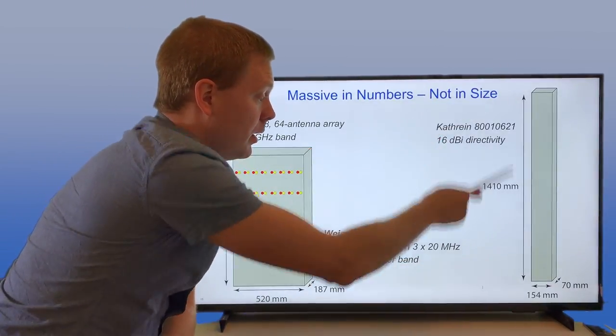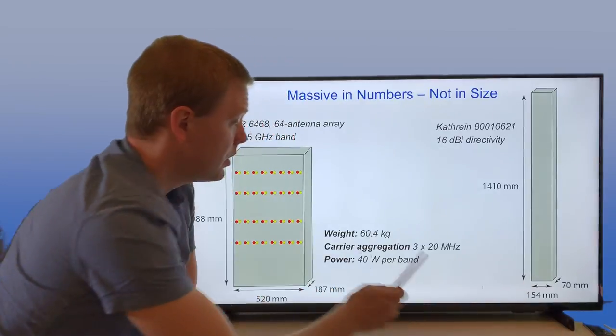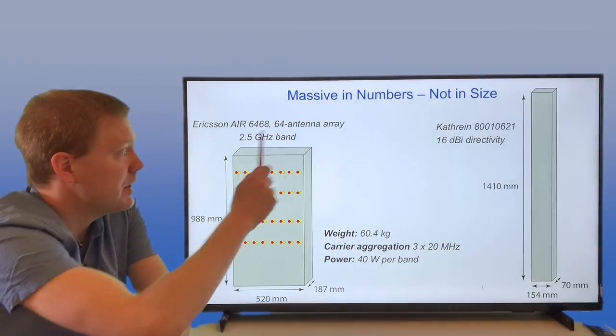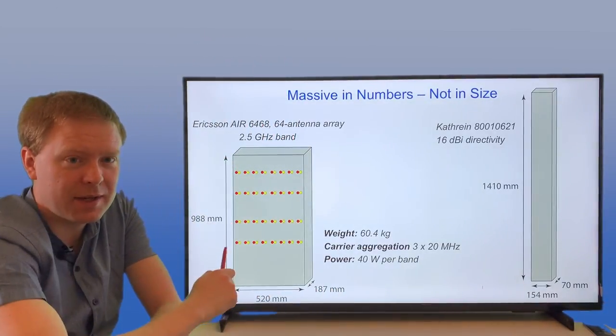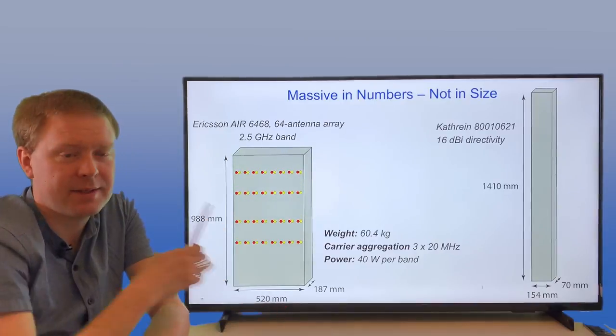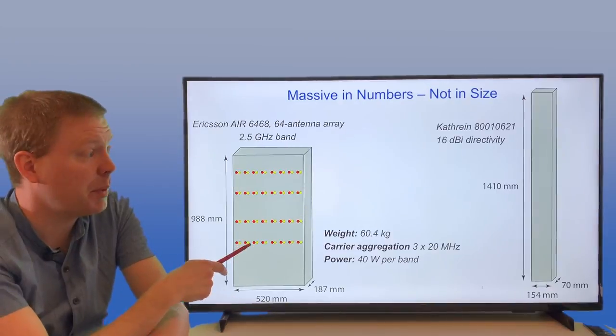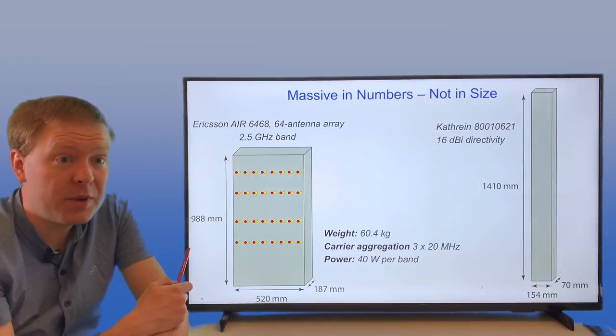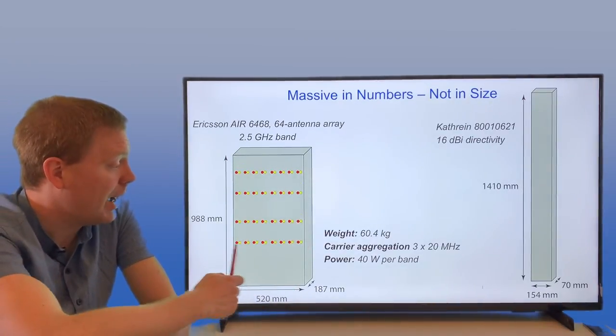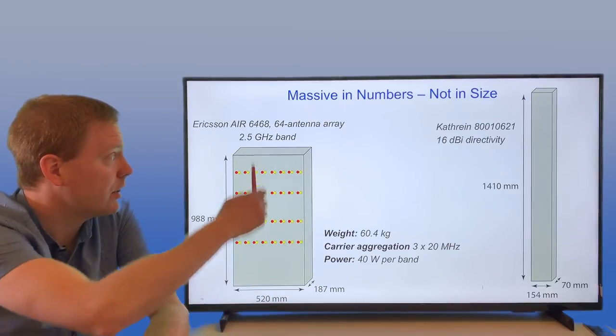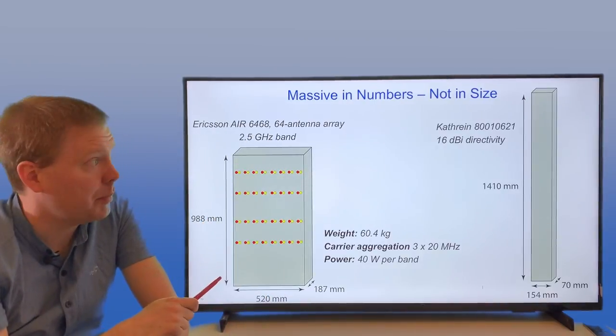If you compare this with a traditional sector antenna with 16 dBi directivity, it's taller but not as wide. If you put them next to each other, you'll potentially see that this one is thicker, but it also doesn't have the same height. It's not obvious that this one will be larger than the other one. But there's a good reason why you have a wider array here and why you can cut down on the vertical part.